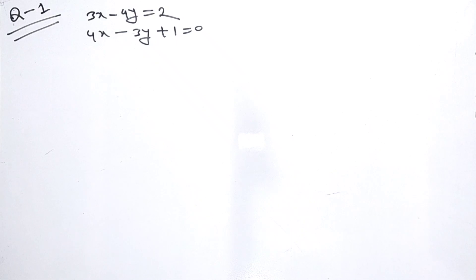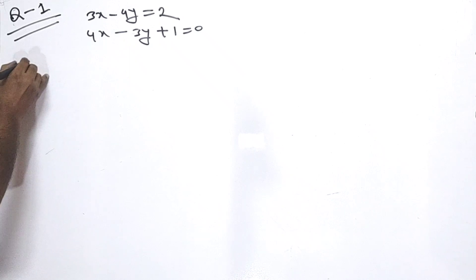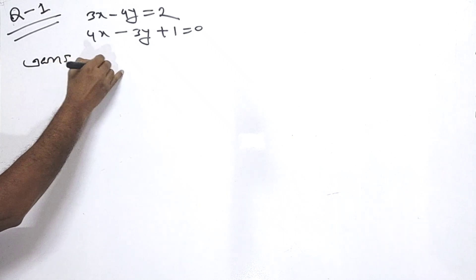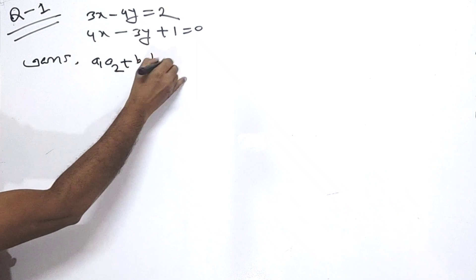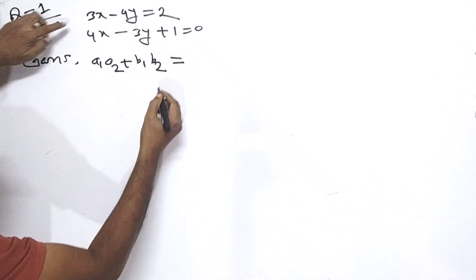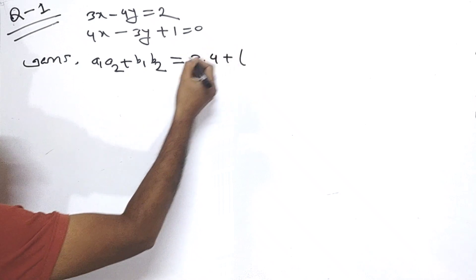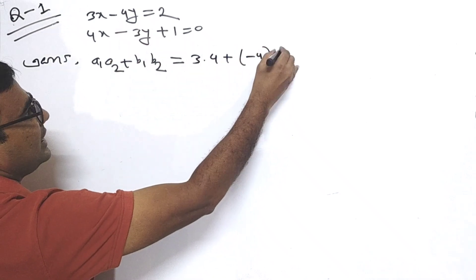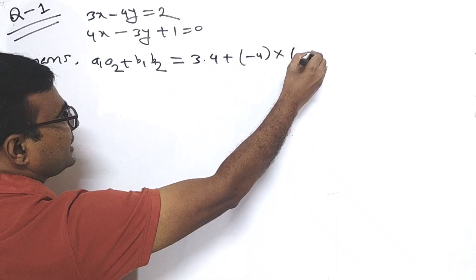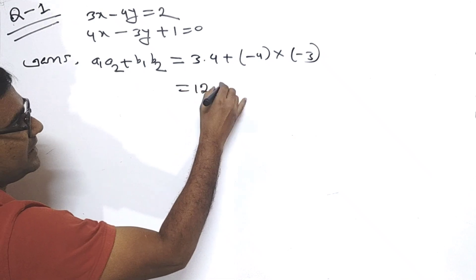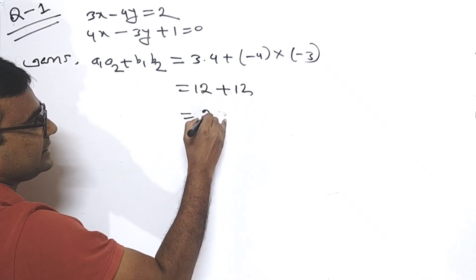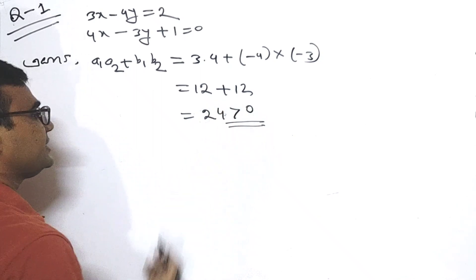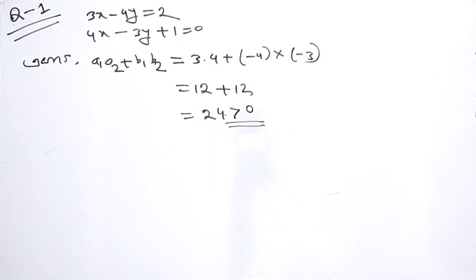A1 is 3, A2 is 4, B1 is minus 4, and B2 is minus 3. So A1 times B2 minus A2 times B1 equals 3 times minus 3 minus 4 times minus 4, which gives minus 9 plus 16 equals 24. The result is not 0.